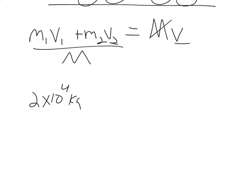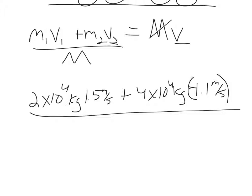I will have the mass of one car, which was 2×10^4, 2.0, just keep that in mind for sig figs, that's kilograms times the velocity was 1.5 meters per second. Plus, on top, we had a mass of 4, 4.0 times 10^4 kilograms times 1.1 meters per second. But that's negative, so let me go ahead and change that whole thing to be negative.